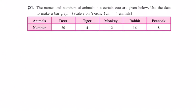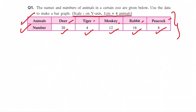Here you have your question: the names and numbers of animals in a certain zoo are given below. Use the data to make a bar graph. You have been given the names of animals — deer, tiger, monkey, rabbit, peacock — and their numbers: 20 deers, 4 tigers, 12 monkeys, 16 rabbits, and 8 peacocks. Whenever you are asked to draw a bar graph, you will be given a table like this. Also, here the scale on the y-axis is one centimeter equal to four animals.